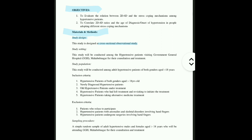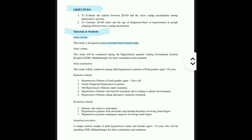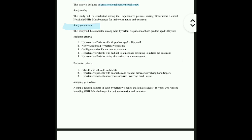So it is mostly cross-sectional only. The rest of the things will depend on the research you are doing. Another section is the study setting — where the study will be conducted. Here it is Government General Hospital, Mahbubnagar. After that, what is your study population — who you are going to include in your study. Here it is all adult hypertensive patients whose age should be more than 18 years and of both genders.